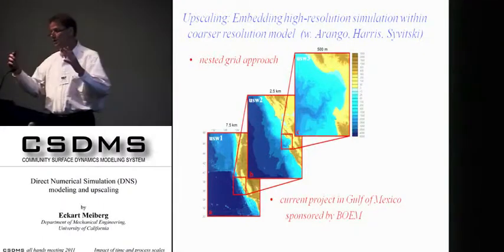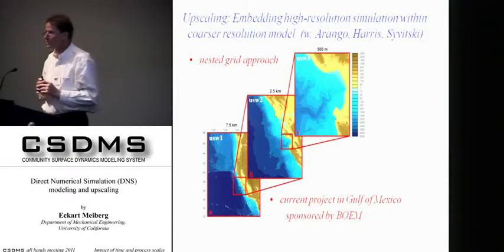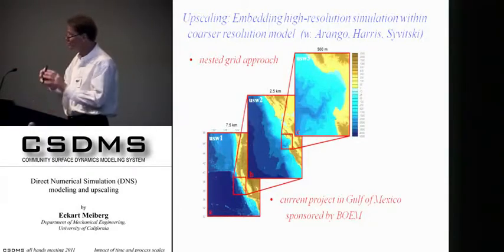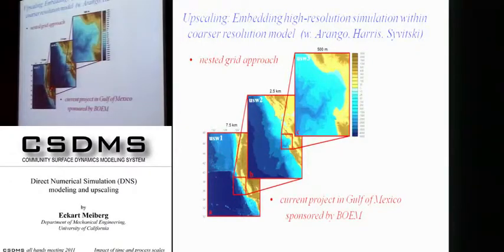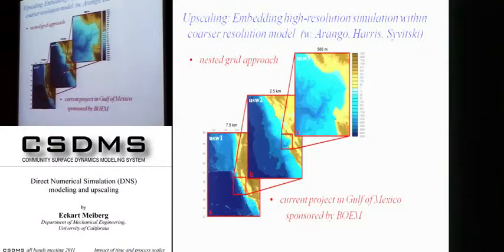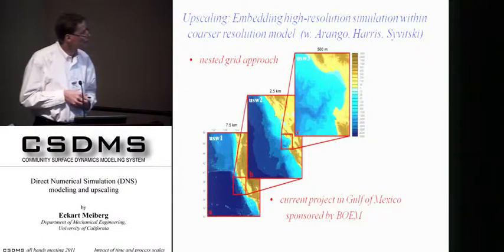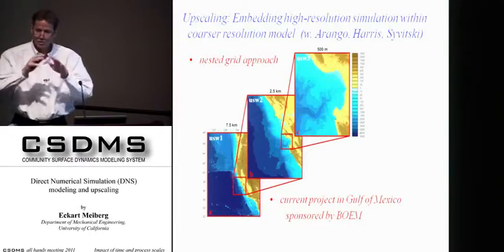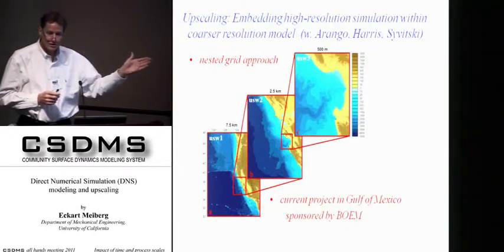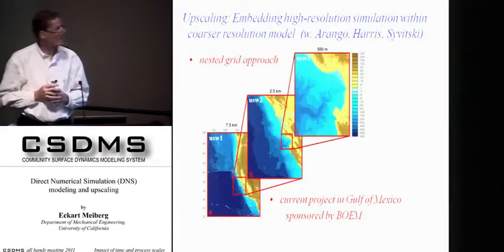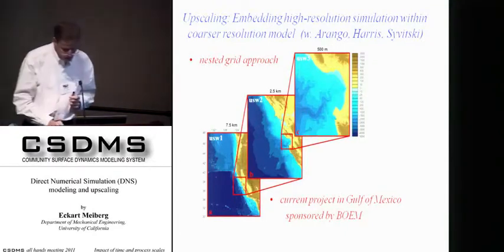Another way to look at upscaling is a nested grid approach: use a coarse mesh for a very large domain, then zoom into a small region with a much finer mesh. This is another way to bridge scales, and we are just starting a project employing this technique, sponsored by BOEM in the Gulf of Mexico. We're trying to couple a coarse-grained ROMS model to a fine-grained turbidity current model in order to study the interaction between large scales and small scales in these Gulf of Mexico events.